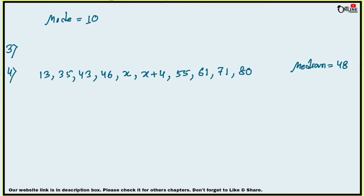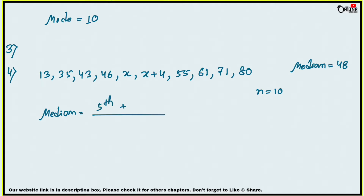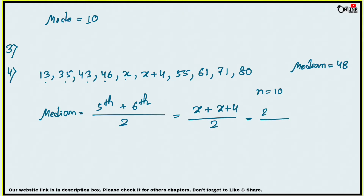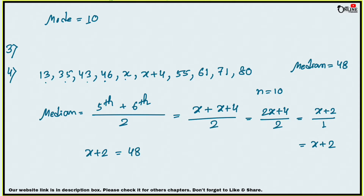There are 10 numbers, so n is even. For even n, the median formula is: [(n/2)th observation + (n/2 + 1)th observation] ÷ 2, which is the 5th and 6th observations divided by 2. The 5th observation is x and the 6th is x+4, giving (2x+4)/2 = x+2. Setting x+2 = 48, we get x = 46.